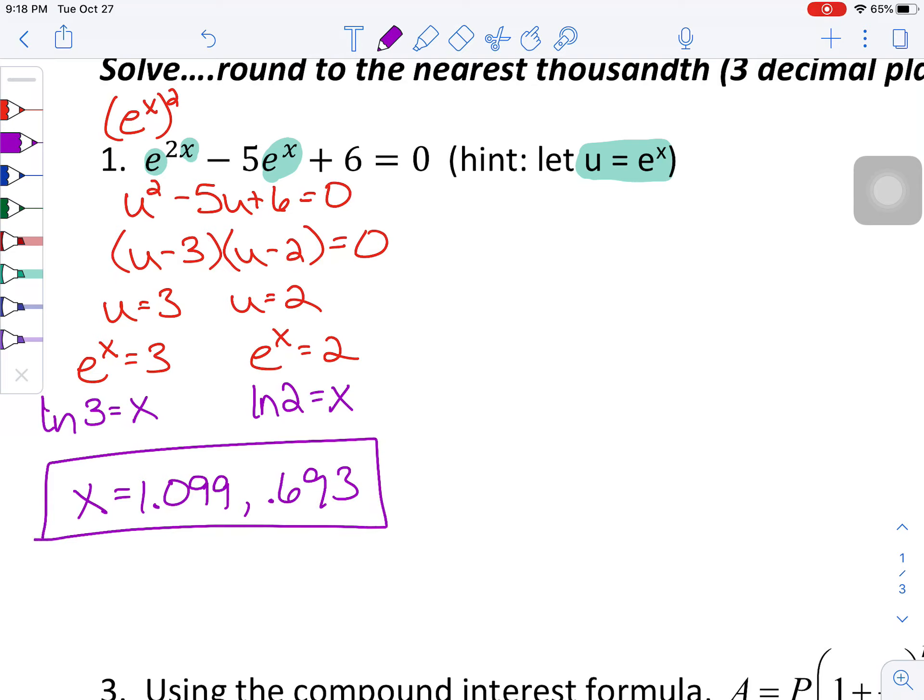You absolutely could check your answers. In fact, I would highly recommend it. I'm going to do that really quickly on my calculator. So I know the 0.693 works. Let's go ahead and grab the other answer and make sure that that one works. And it does. So those two are good answers.